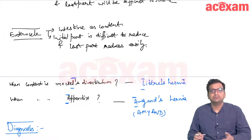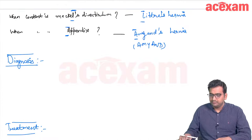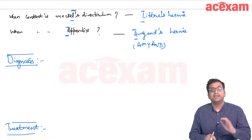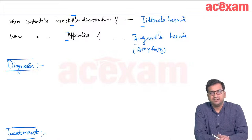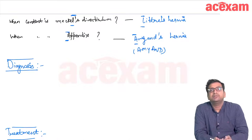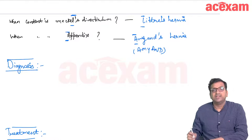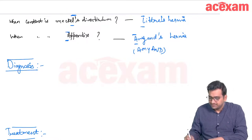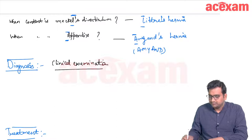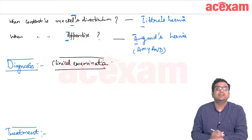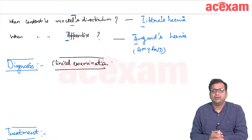How to diagnose inguinal hernia: the patient typically presents with an inguinal swelling that increases on coughing or straining and reduces on lying down. The diagnosis is made by clinical examination.